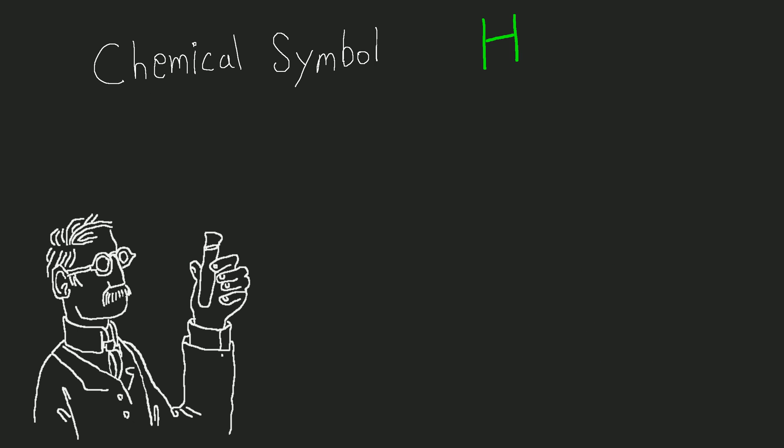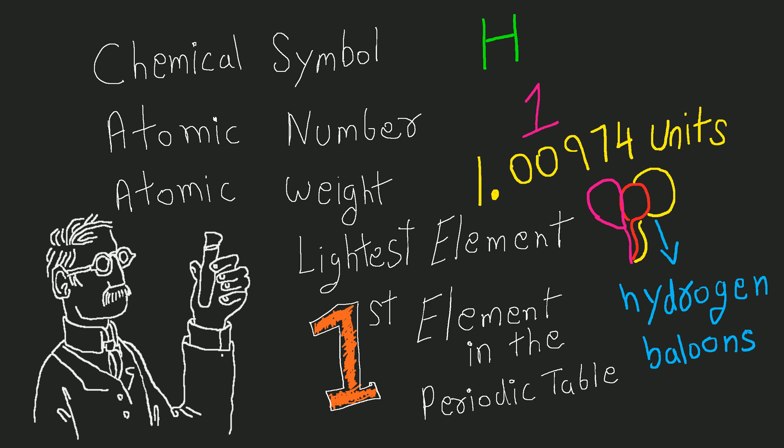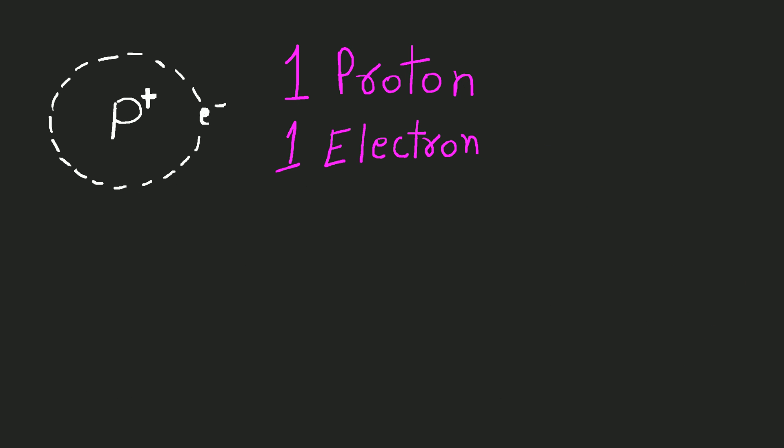Things to know about hydrogen: chemical symbol H, atomic number 1, atomic weight 1.00974 units. Hydrogen is the lightest element, the first element in the periodic table, and has one proton and one electron in its valence orbit.